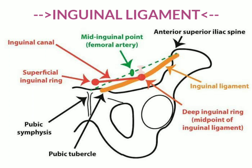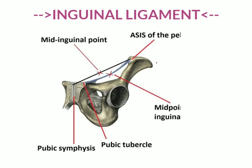Coming to the mid inguinal point: here the key difference is that the midpoint of the inguinal ligament uses the pubic tubercle, whereas the mid inguinal point uses the pubic symphysis. When you draw an imaginary horizontal line extending from the anterior superior iliac spine to the pubic symphysis, the center of this line is called the mid inguinal point.